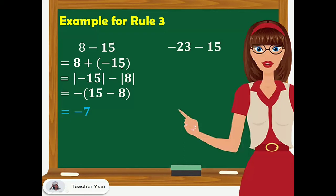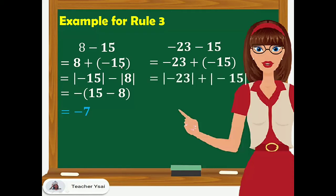Another example: negative 23 minus 15 becomes negative 23 plus negative 15. Following Rule 1 for algebraic addition, we take the absolute value of negative 23 plus the absolute value of negative 15. Since the common sign is negative, we prefix the negative sign: negative times (23 plus 15). The final answer is negative 38.